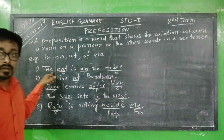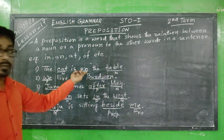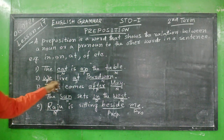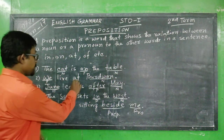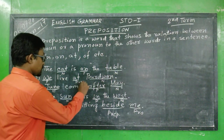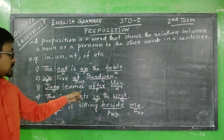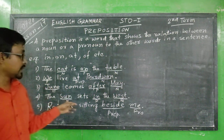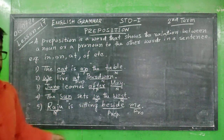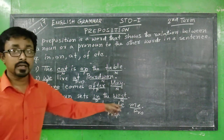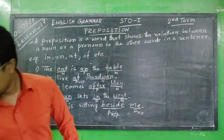Let me repeat those examples once again. 'The cat is on the table' — 'on' is the preposition. 'We live at Birtone' — 'at' is the preposition. 'June comes after May' — 'after' is the preposition. 'The sun sets in the west' — 'in' is the preposition. 'Raju is sitting beside me' — 'beside' is the preposition.